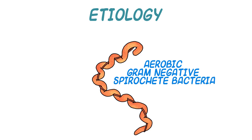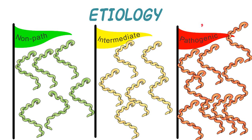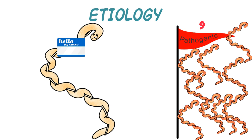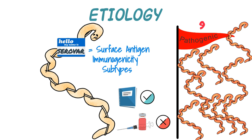Leptospira are aerobic, gram-negative, spirochete bacteria with a corkscrew appearance. Historically, there have been many classifications used, but genetic analysis now recognizes 21 species of leptospires, with 9 being pathogenic, 6 being intermediate in pathogenicity, and 6 non-pathogenic. Some of the common leptospiral pathogens of domestic animals now have different species names that include serovar, or surface antigen immunogenicity subtypes. It's useful to know that the revised nomenclature is now reflected in the scientific literature, but not on vaccine and pharmaceutical labels. Serovar and serovar group names remain in common use.